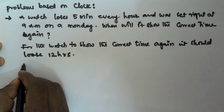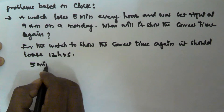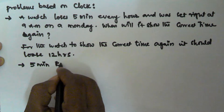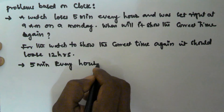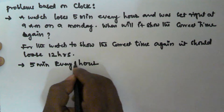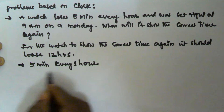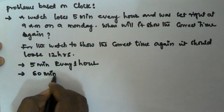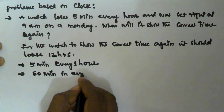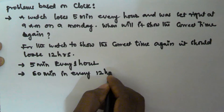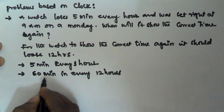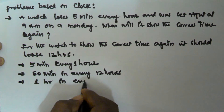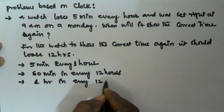According to the question, the watch is losing 5 minutes every 1 hour. So I multiply this by 12 — that means 12 times 5 is 60 minutes in every 12 hours. That means 60 minutes equals 1 hour, so it is losing 1 hour in every 12 hours.